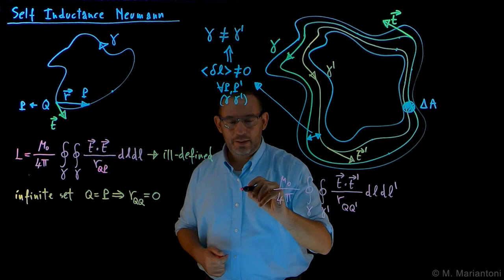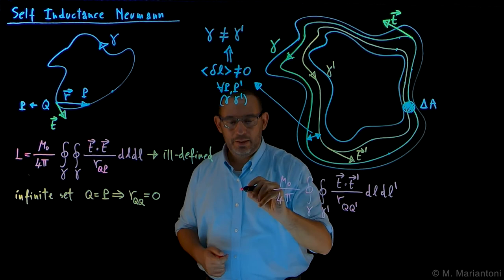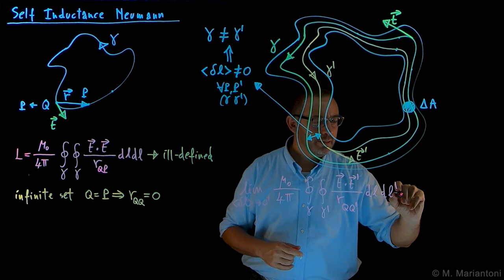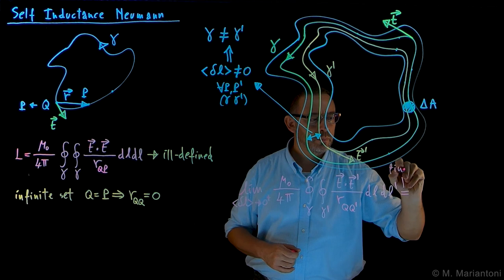If that is the case, if now we take the limit for the mean value of delta L that goes to zero plus of this quantity here, if this limit exists and is finite, where this converges, we call it the self-inductance of this circuit.